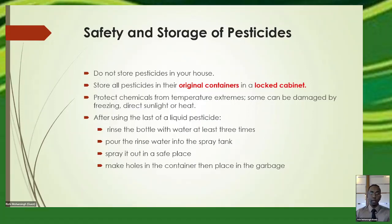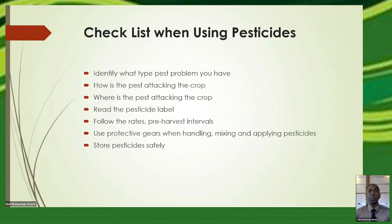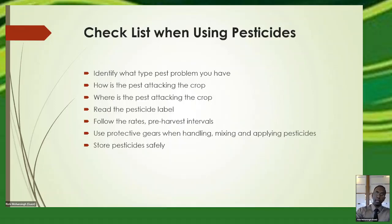To summarize the pesticide section: first, identify the type of pest problem and where it is attacking your crop. Read your label — it has all the information you need on how to use the pesticide. Follow the rates, follow the pre-harvest interval, use your protective gear when handling, mixing, or applying pesticides, and store pesticides safely. Never just broadcast pesticides randomly — the label tells you exactly how to apply them, whether along borders or otherwise as specified.